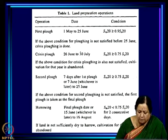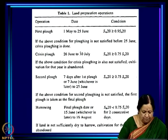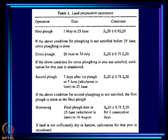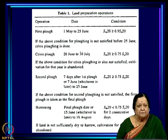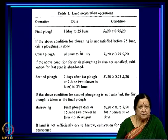If the crisis ploughing condition is also not satisfied, cultivation for that year is abandoned. They take two chances, but if rain is simply not enough till end of July even for crisis ploughing, there is no point in cultivating groundnut. The second plough is done 7 days after the first plough or 7th June, whichever is later, until 25th June, and requires soil moisture over 75% of maximum. If the second ploughing condition is not satisfied, the first plough itself is taken as the final plough.